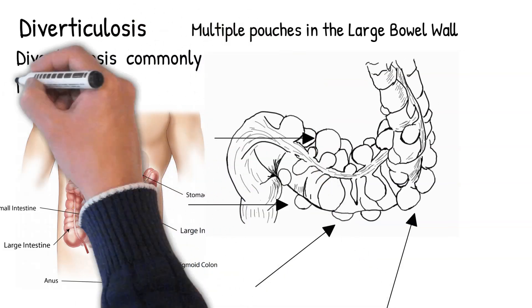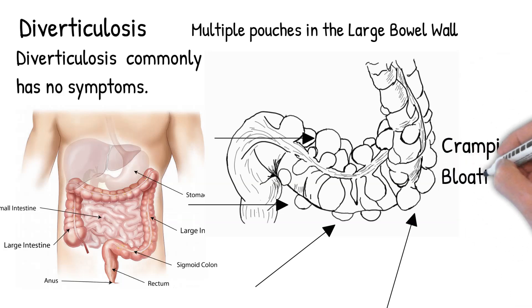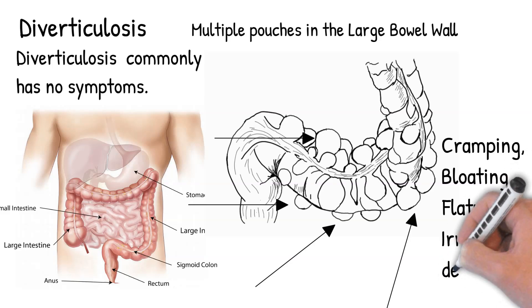Diverticulosis commonly has no symptoms. Some people with diverticulosis complain of cramping, bloating, flatulence, and irregular defecation. But these symptoms may be caused by irritable bowel syndrome.